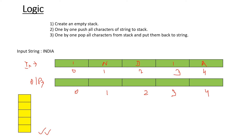After creating the empty stack, we push all the characters of the string onto the stack one by one. So we push 'I' — it goes and sits at the bottom position. After that we push 'N', then we push 'D', then we push 'I' again, and finally we push 'A'. This completes step two.